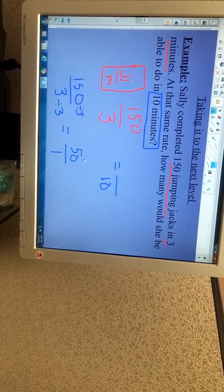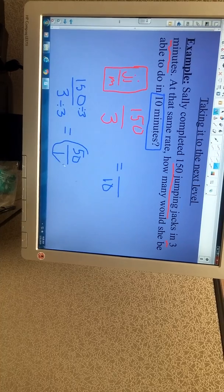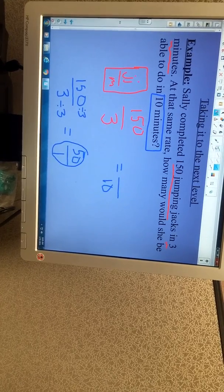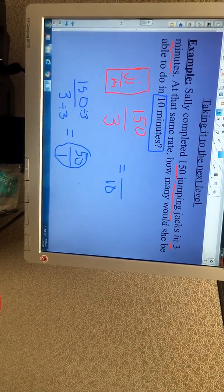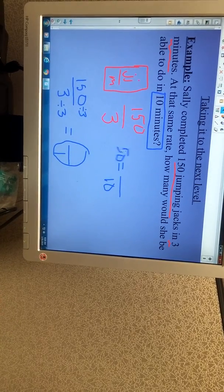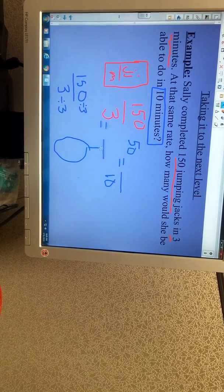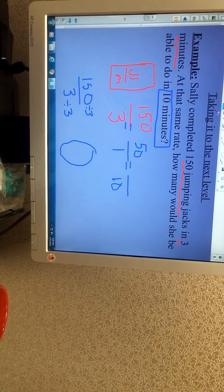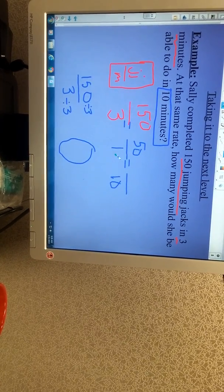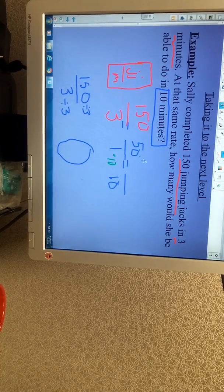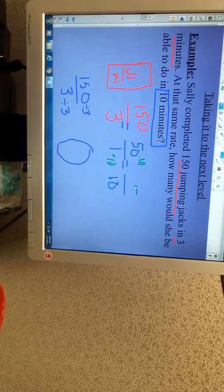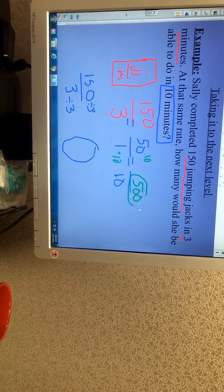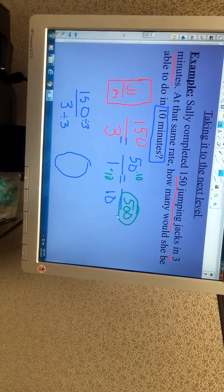If we know she can do 50 jumping jacks in 1 minute, to get to 10 minutes, we just take that amount of jumping jacks and multiply it by 10, which gives us 500 jumping jacks in 10 minutes.